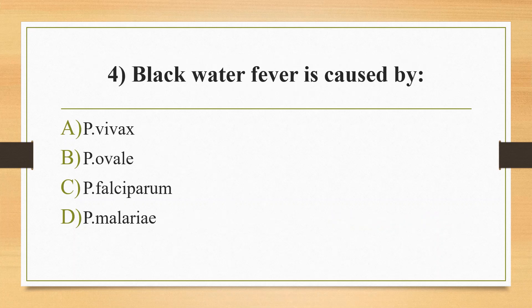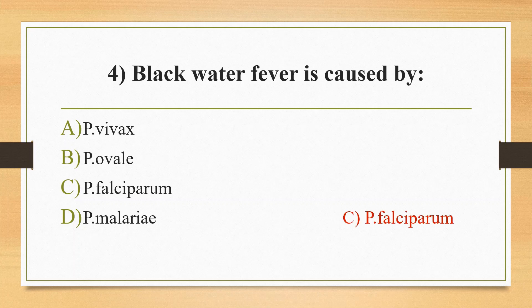Fourth question: black water fever is caused by option A Plasmodium vivax, option B Plasmodium ovale, option C Plasmodium falciparum, option D Plasmodium malariae. The answer is option C, Plasmodium falciparum. Black water fever is also called malarial hemoglobinuria; it is characterized by acute intravascular hemolysis, and Plasmodium falciparum is the most virulent species in man.